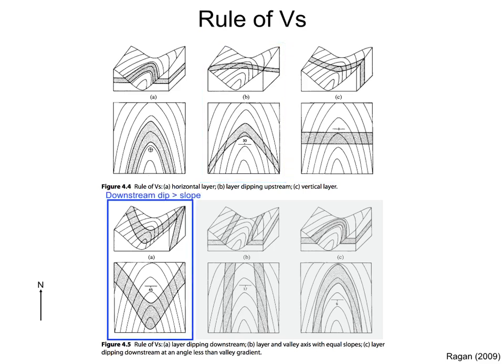The outcrop trace of a layer dipping downstream, more than the slope of the valley, also has a V shape, with the V pointing in the dip direction. So, a layer dipping more than the slope of the valley will have a V outcrop pattern across the valley, with the V pointing in the direction of dip.